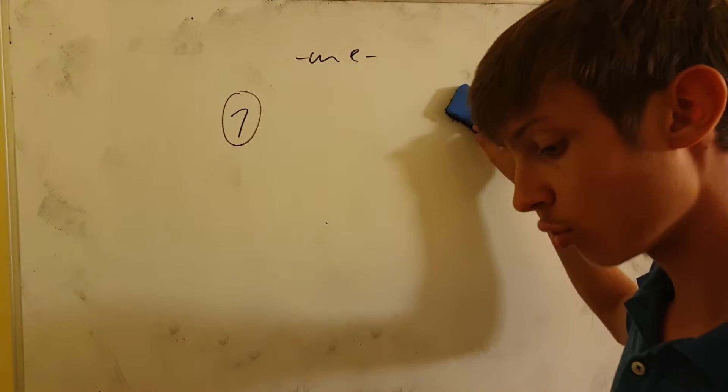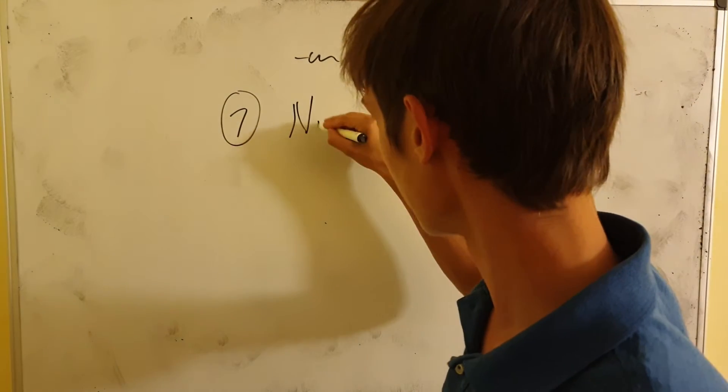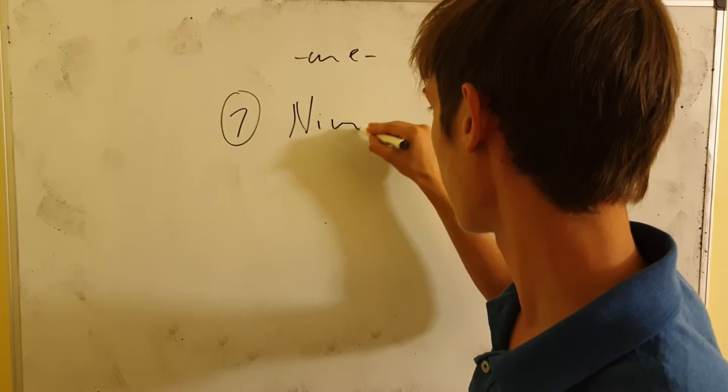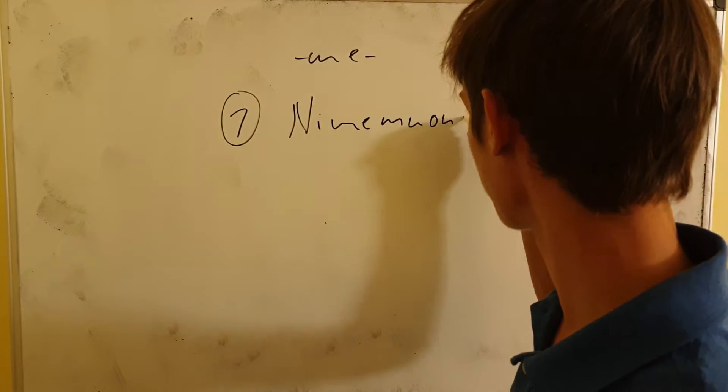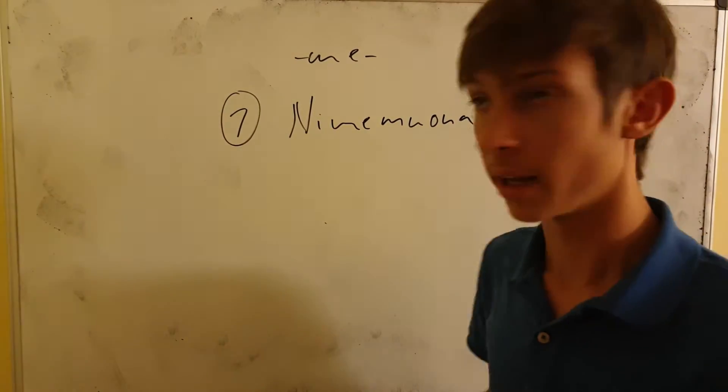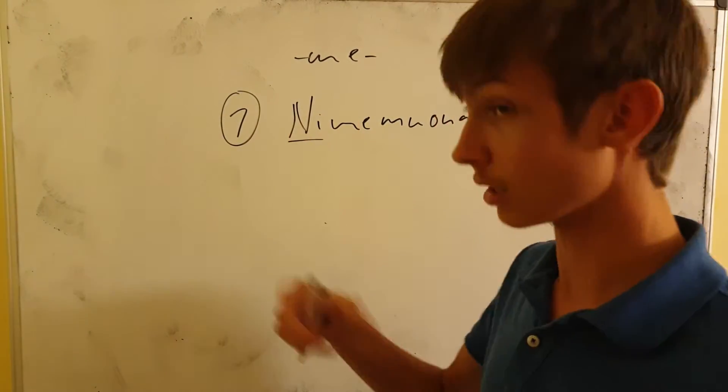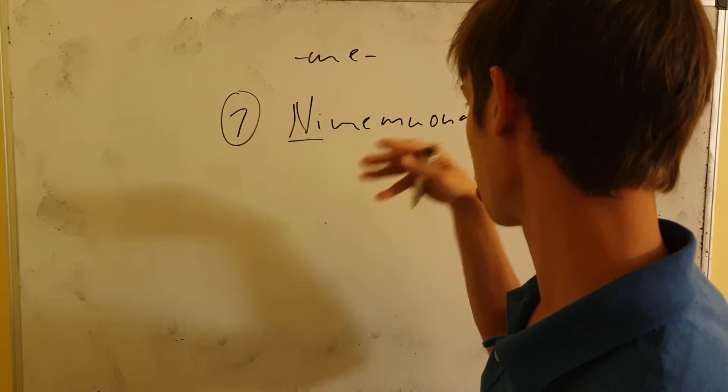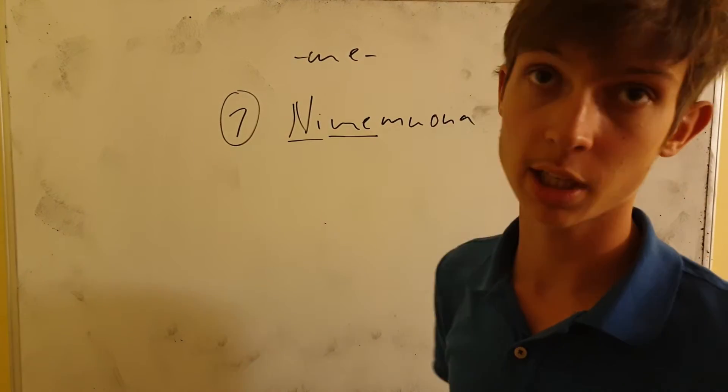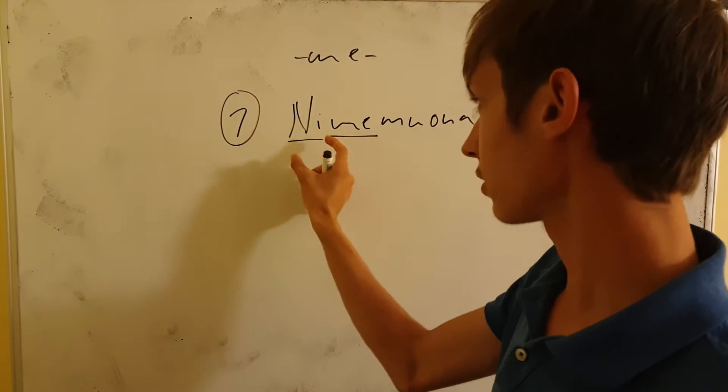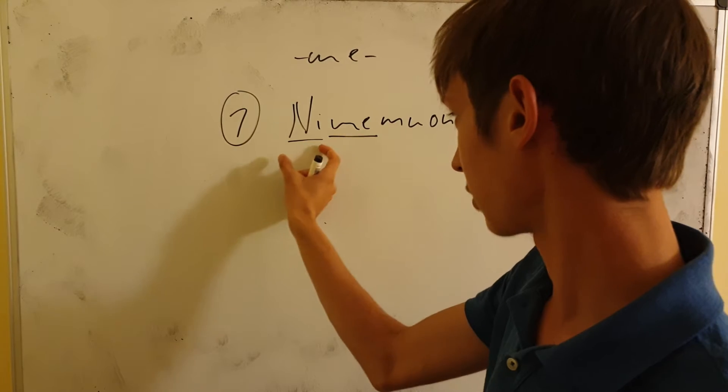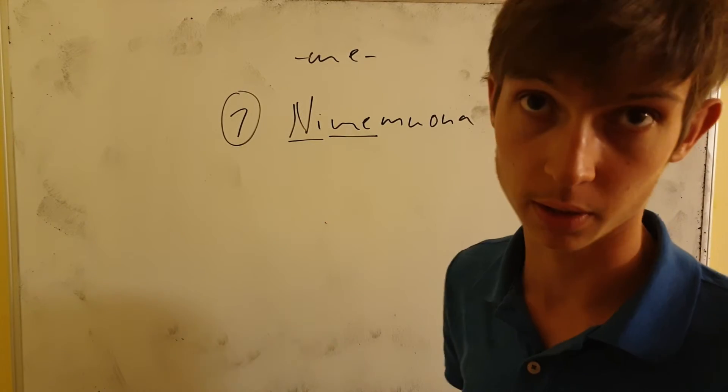Example number one is nimemwona. Now, ni is I, that means that it's first person. That's the conjugation of the verb. Now, meh is our particle right here. So after the subject prefix, after the subject particle and before the object particle, it appears.